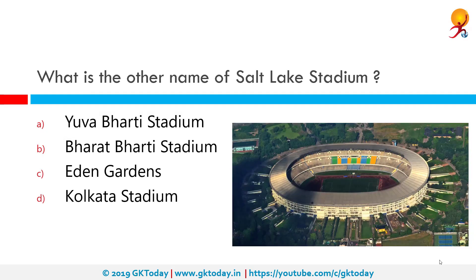What is the other name of Salt Lake Stadium? The correct answer is Yuva Bharati Stadium. Salt Lake Stadium, officially known as Vivekananda Yuva Bharati Krirangan, is a multi-purpose stadium in Bidhannagar, Kolkata with a current capacity of 85,000. It is the largest stadium in India by seating capacity.